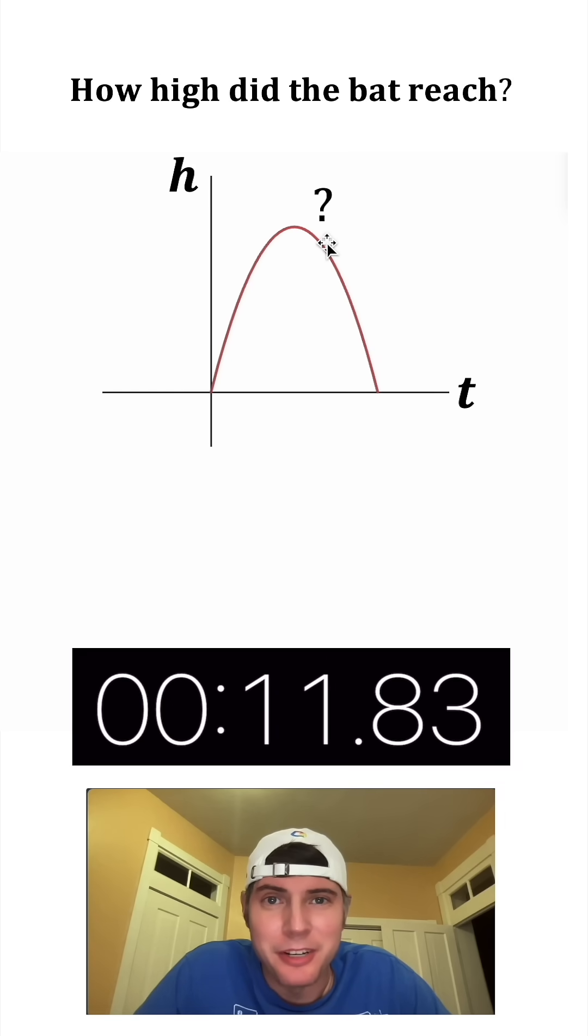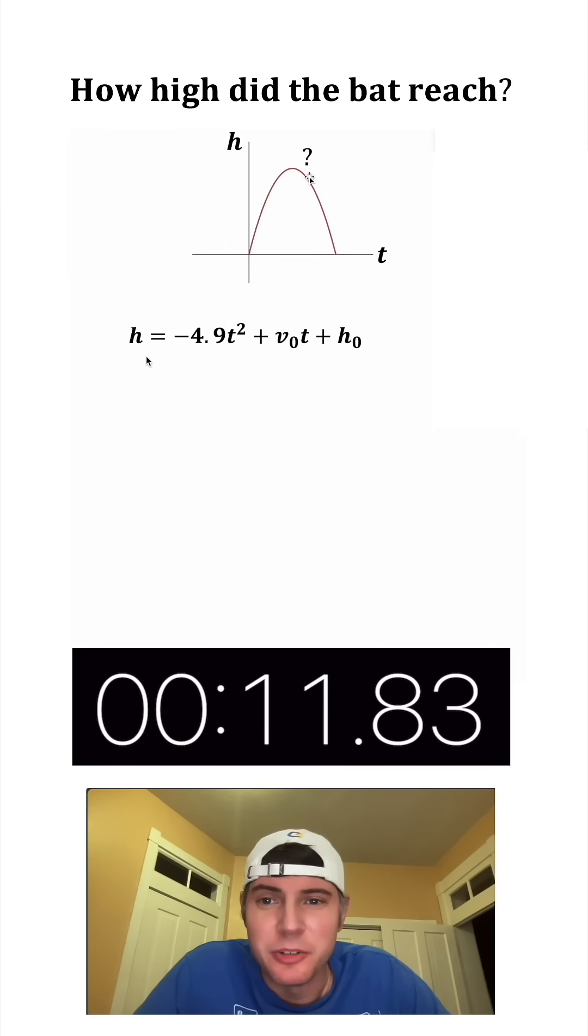This is the formula we're going to use: the height is equal to negative 4.9 t squared plus the initial velocity times time plus the initial height. So we'll call the initial height zero because the top of the bat is really close to the ground as he throws it.